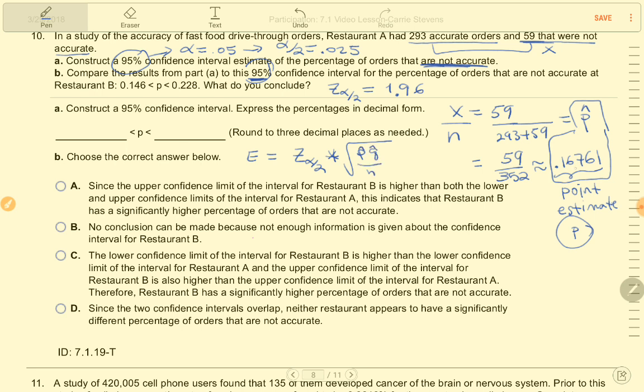I know what p-hat is. What is q-hat? So I have 0.16761 times q-hat, which will be 1 minus that. So that is 1 minus 0.16761 gives me 0.83239, all divided by my total n of 352.